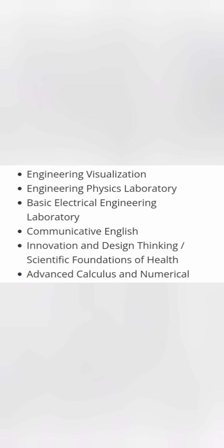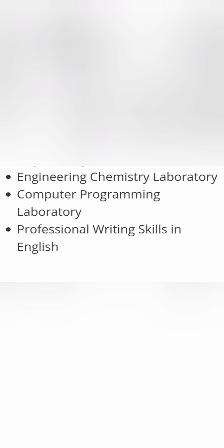Engineering lab, electrical labs, and physics labs are also included, along with communicative English taught in both semesters one and two. You also have advanced calculus, numerical methods - almost like subjects from Class 12 or PUC level. Innovation and design thinking or scientific foundation is one option. Similar to engineering physics, you also have engineering chemistry, basics of electronics and communication, elements of mechanical engineering, and chemistry laboratory. There are only five papers per semester, so you choose from these options. Computer programming lab and professional writing skills in English are also part of semester one and two, common across all engineering branches.